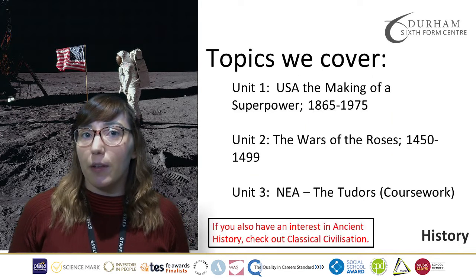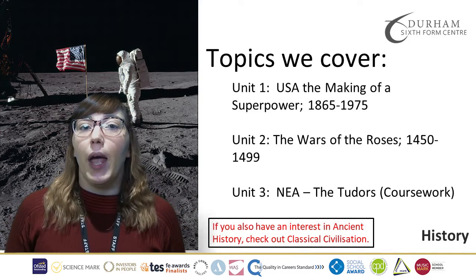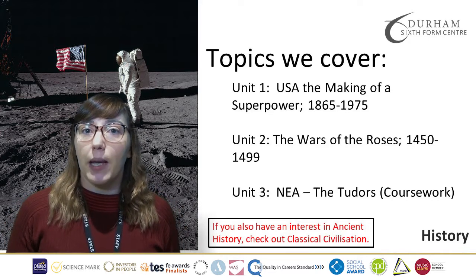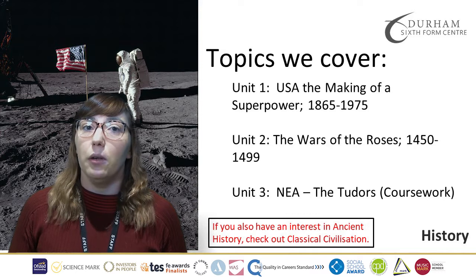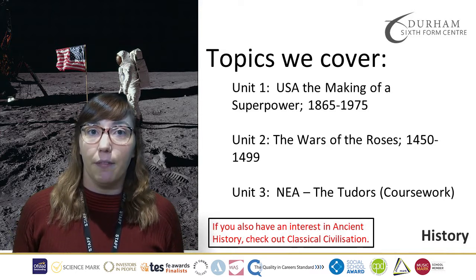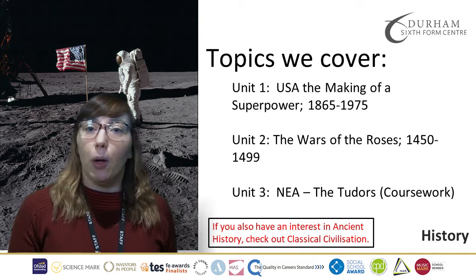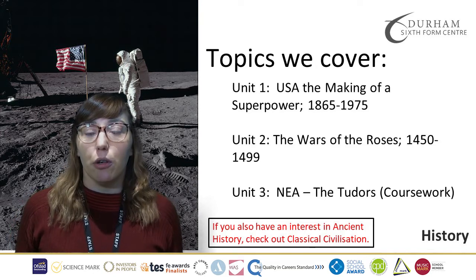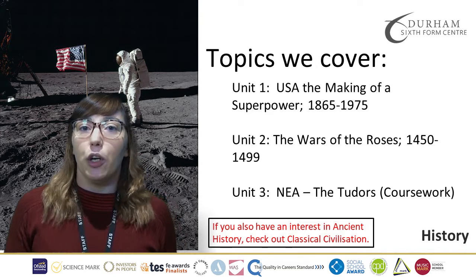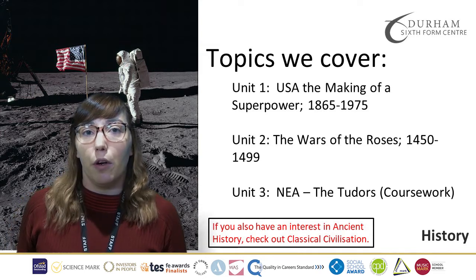We cover three topics in total for the A-Level. Unit 1 is our breadth study. We look at USA: The Making of a Superpower, which goes from 1865 to 1975. This is a thematic study, so we look at how politics has changed across the period, we look at economy and society, and we look at the changing role of America in the world and foreign policy.